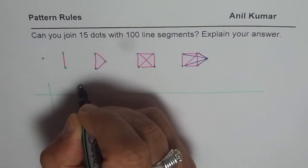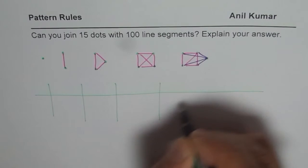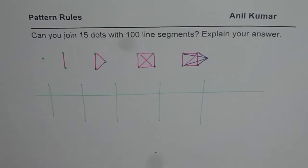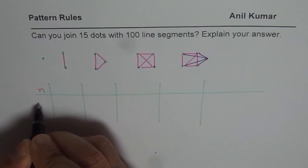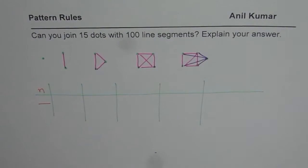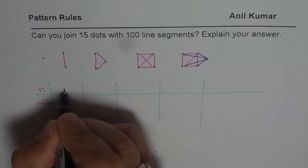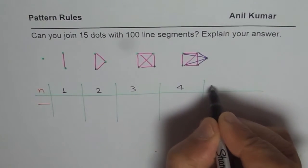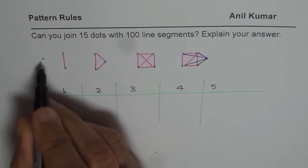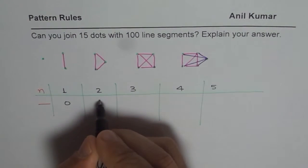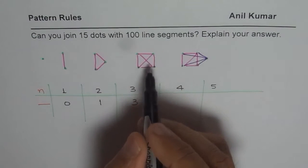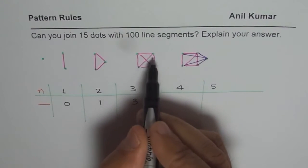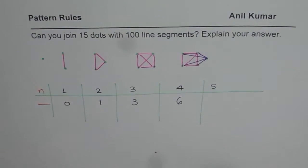Let me make a table. I'll write down the number of dots in one row and the number of line segments in another. With one dot I have zero segments; with two dots, one segment; with three dots, three segments; and with four dots, six segments.